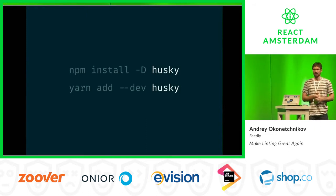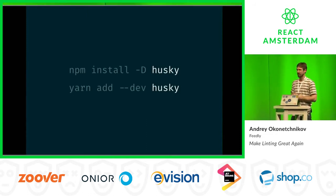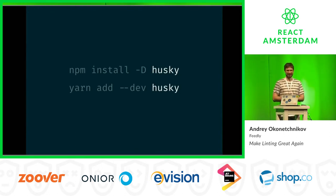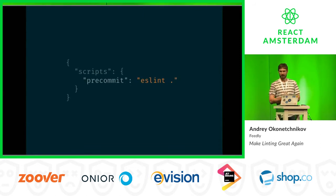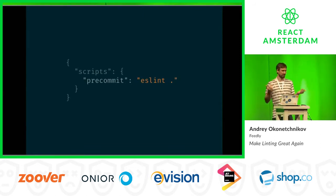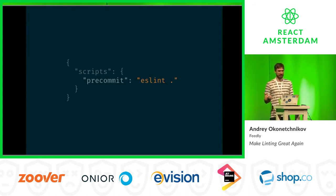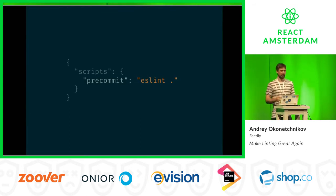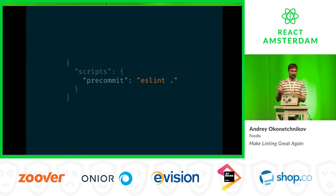It's called Husky. You just npm install — or if you're modern, you use Yarn. It doesn't matter. And after that in your package.json you just add this new script called pre-commit, and you run a command — ESLint in this case — on a pre-commit hook. So it will just work across the whole team. The next time everyone checks out this code, it will just work.